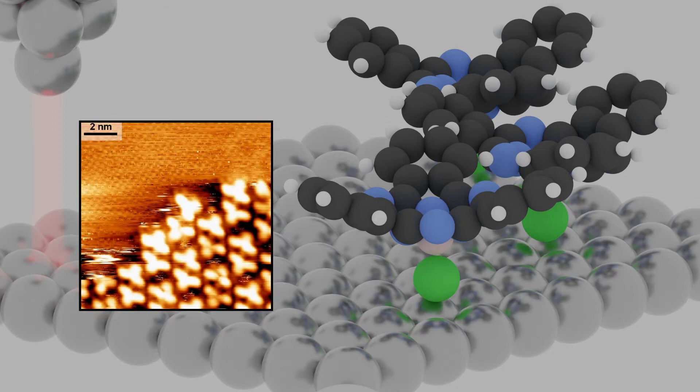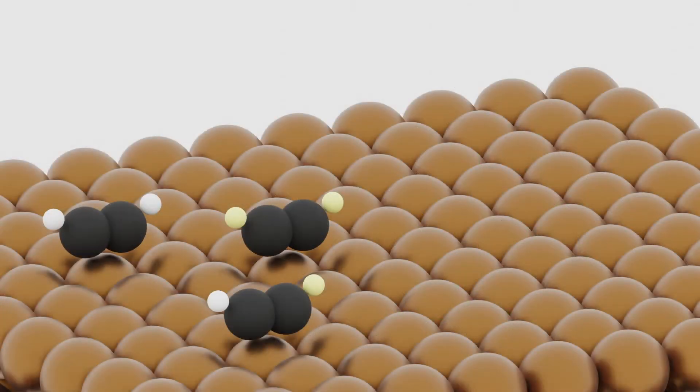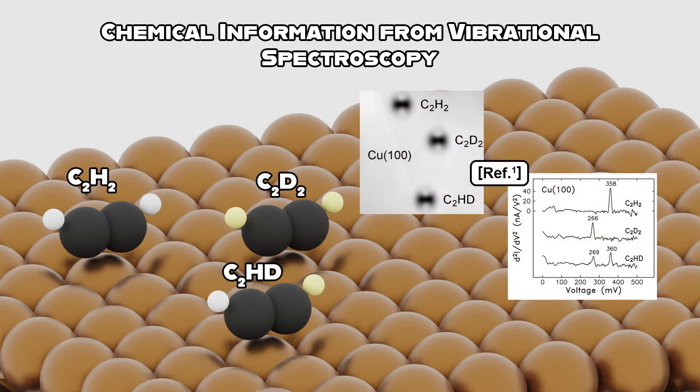Additionally, conventional STM lacks chemical sensitivity, requiring a priori knowledge in order to identify atomic or molecular adsorbates. Vibrational spectroscopy is necessary to identify chemical species by their vibrational fingerprints. This can be addressed with inelastic electron tunneling spectroscopy, but this crucially requires UHV conditions and liquid helium temperatures.